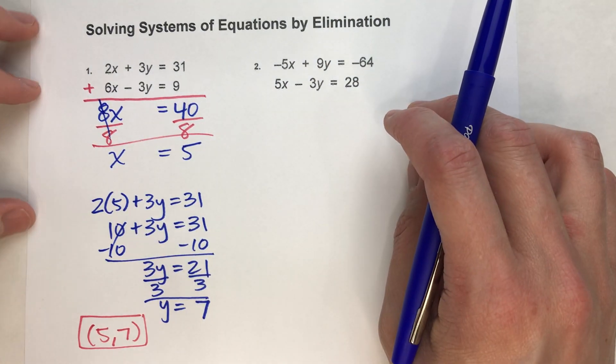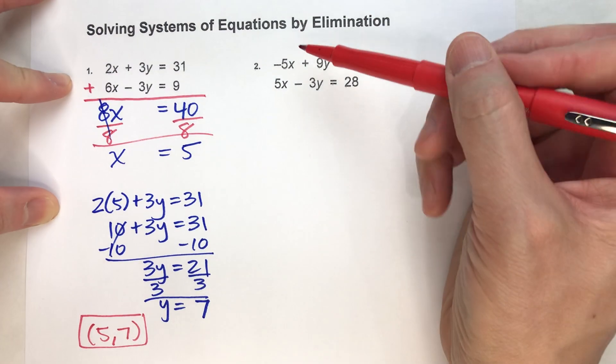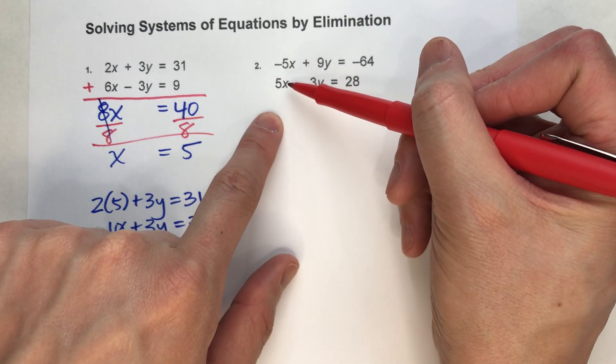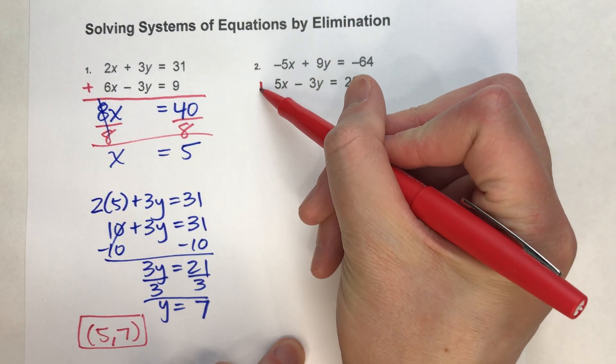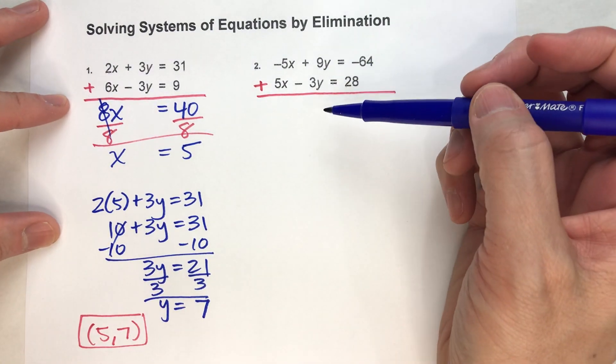Let's do the second example, because it's very similar but we get a different result. We've got our x's that match up this time: negative 5x and positive 5x. So we're going to add the two equations together, just like we did before.